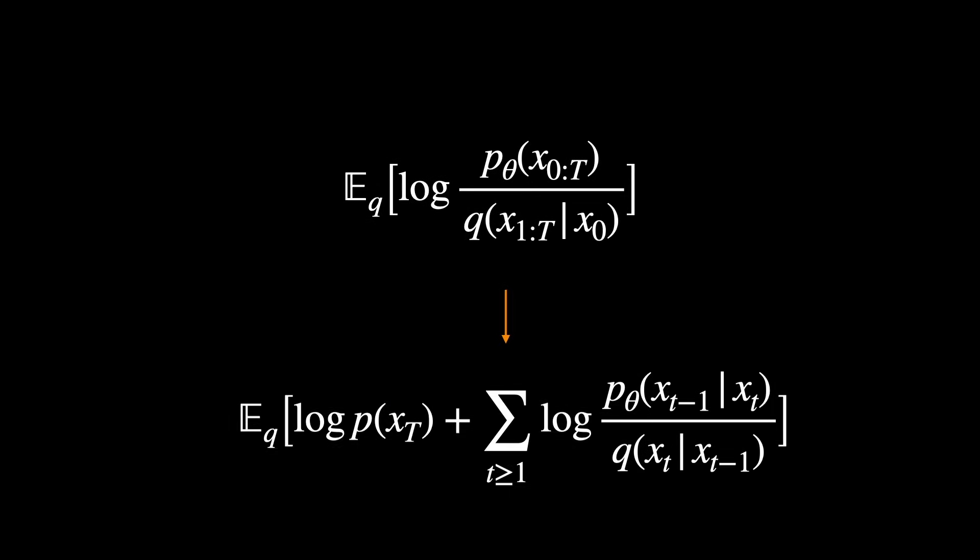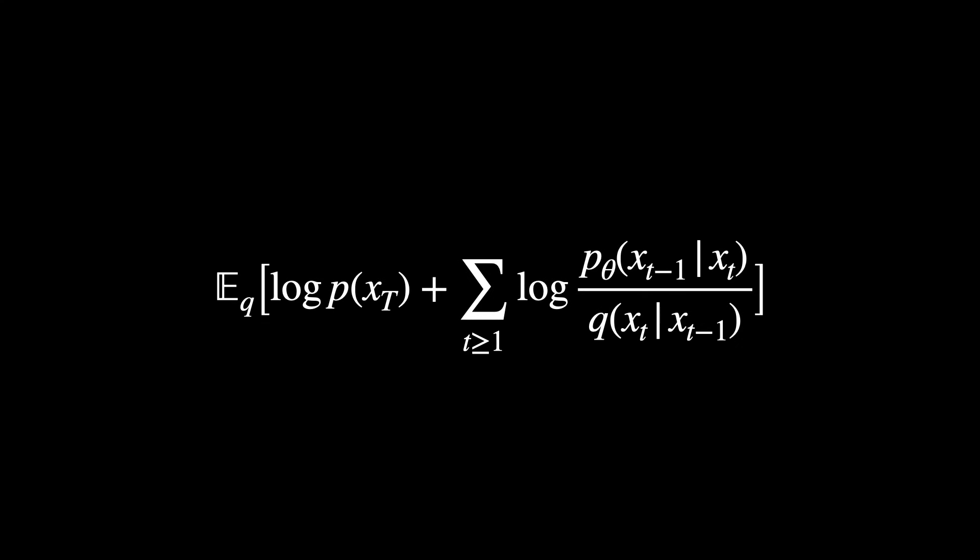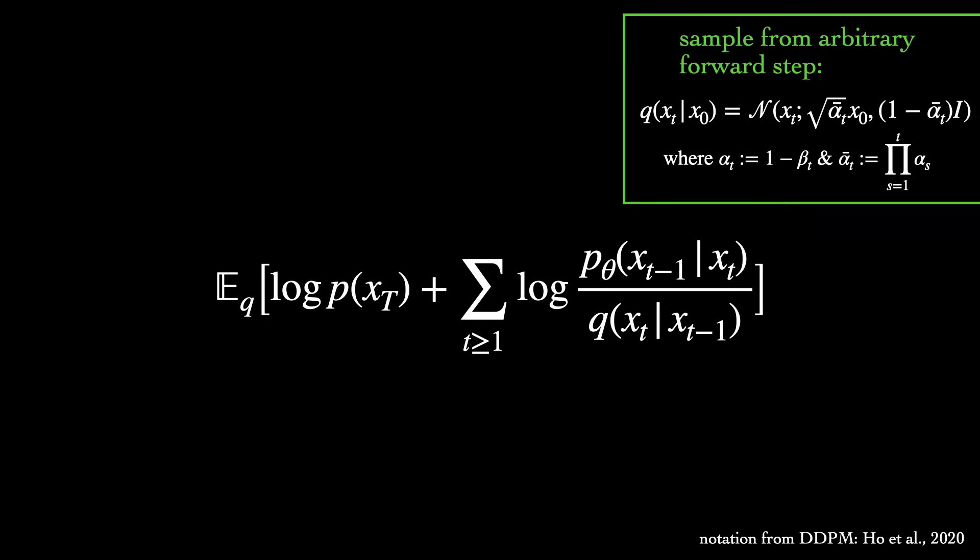Now, there's a nice property of the forward process q that we didn't touch on earlier. Any arbitrary step of the forward process can be sampled directly in closed form. This is just because the sum of independent Gaussian steps is still a Gaussian. So at training time, any term of this objective can be obtained without having to simulate an entire chain. Likewise, we can optimize this objective by randomly sampling pairs and maximizing the conditional density assigned by the reverse step.